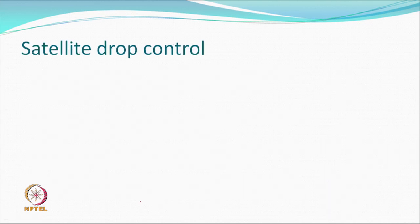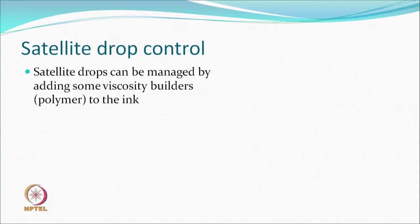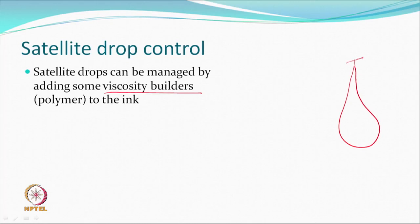Satellite drops can create unwanted splash on the target substrate, whether paper or fabric, resulting in reduced print quality. To control satellite drop formation, one approach is to add viscosity builders — a polymer that increases the ink viscosity slightly. This causes the ligament, when it breaks, to shrink back toward the main drop rather than breaking into satellite drops.